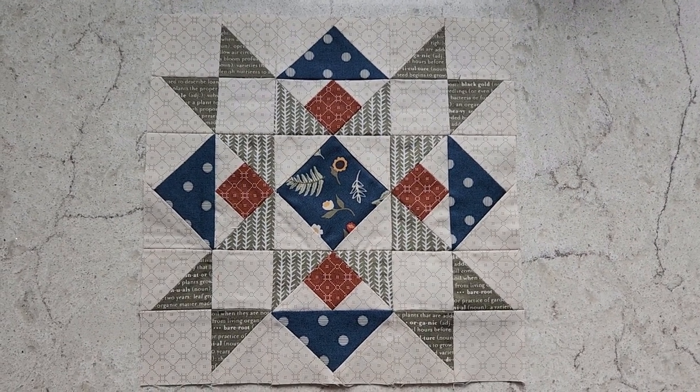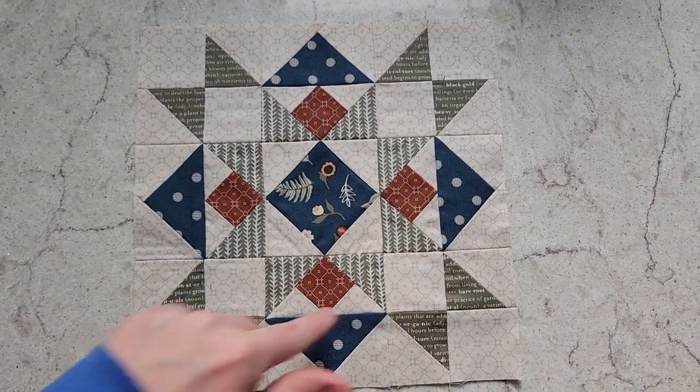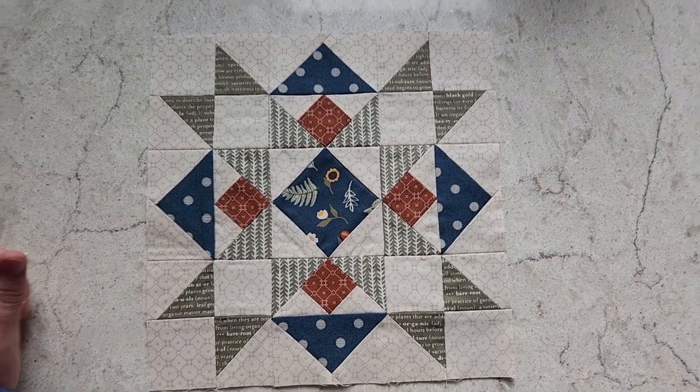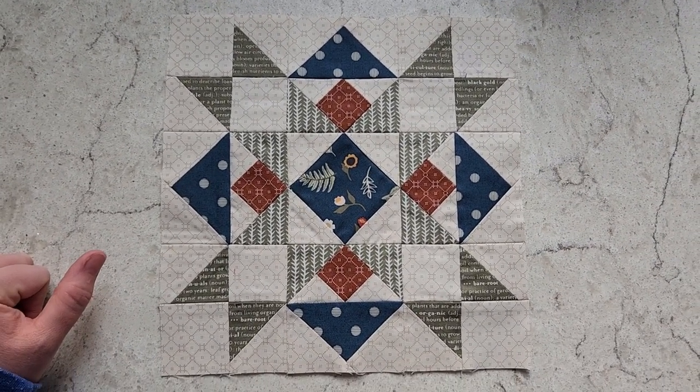Here is the final block and as I told you, you can see my text print is going the correct direction on all eight half square triangles. I hope these tips helped you out with this block. Thanks so much for watching.